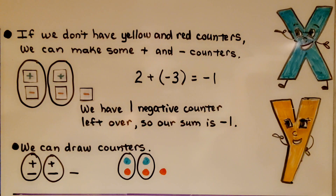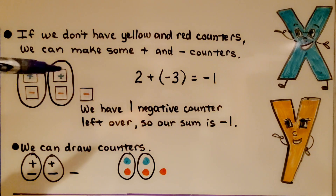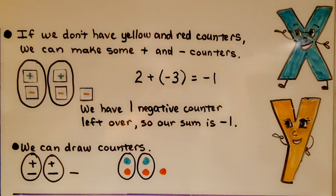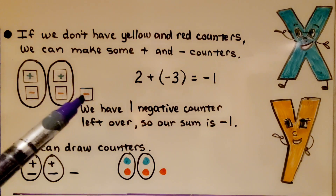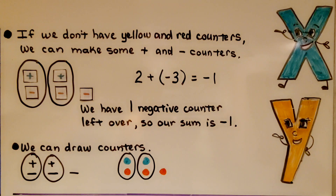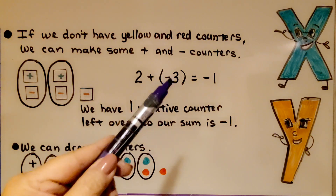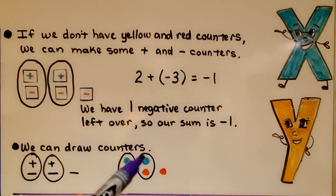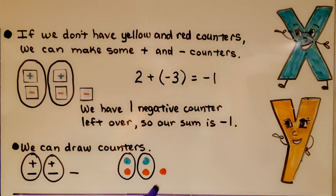If we don't have yellow and red counters, we can make plus and minus counters. For positive two plus negative three, we make two plus signs and three minus counters. After making zero pairs, we have one negative counter left over, so our sum is negative one. We can even draw counters on paper — two plus signs and three minus signs — circle the zero pairs and see one negative remains. Or use colored pencils: two green dots for positives and three red dots for negatives, make zero pairs, and one negative is left over.